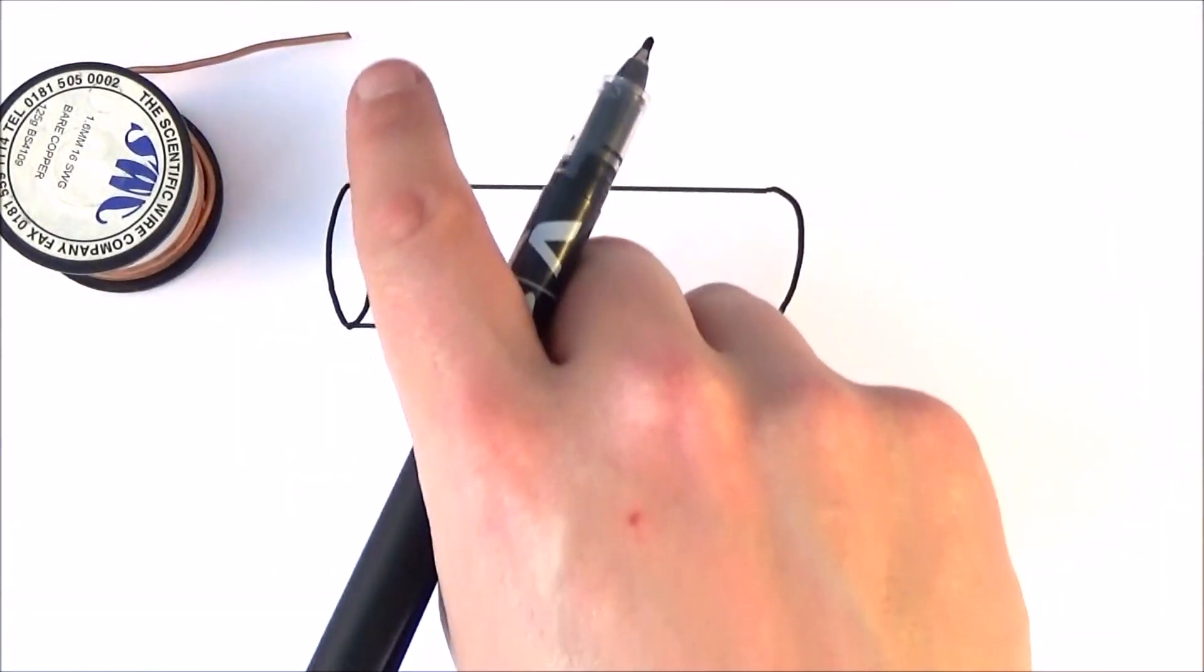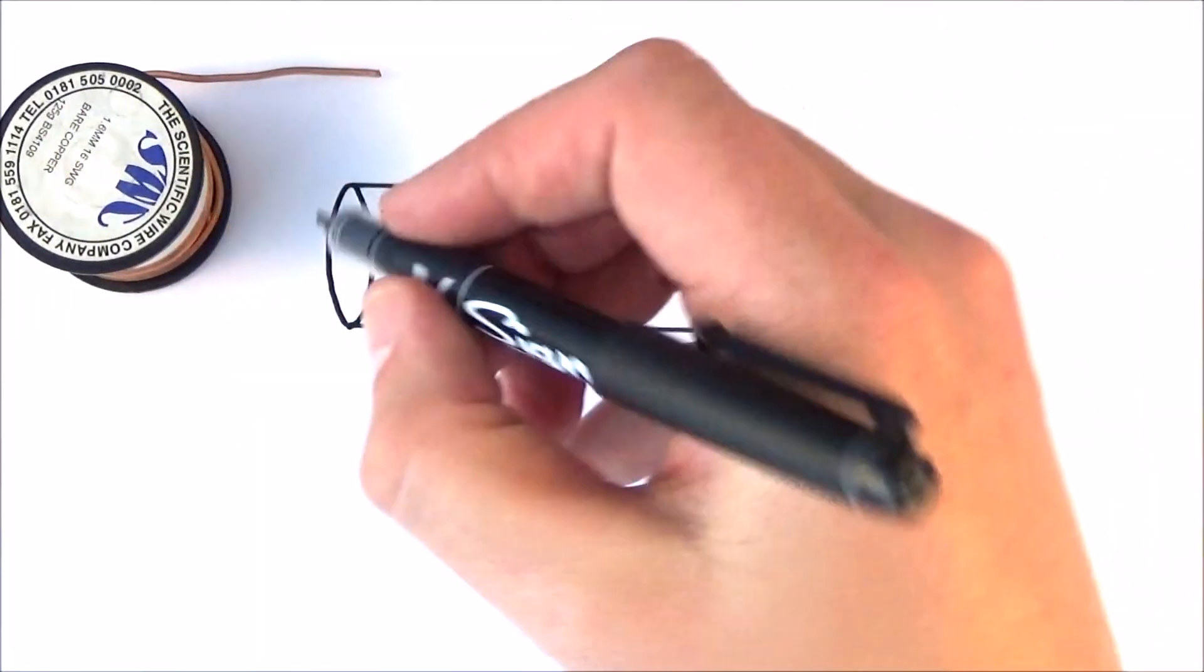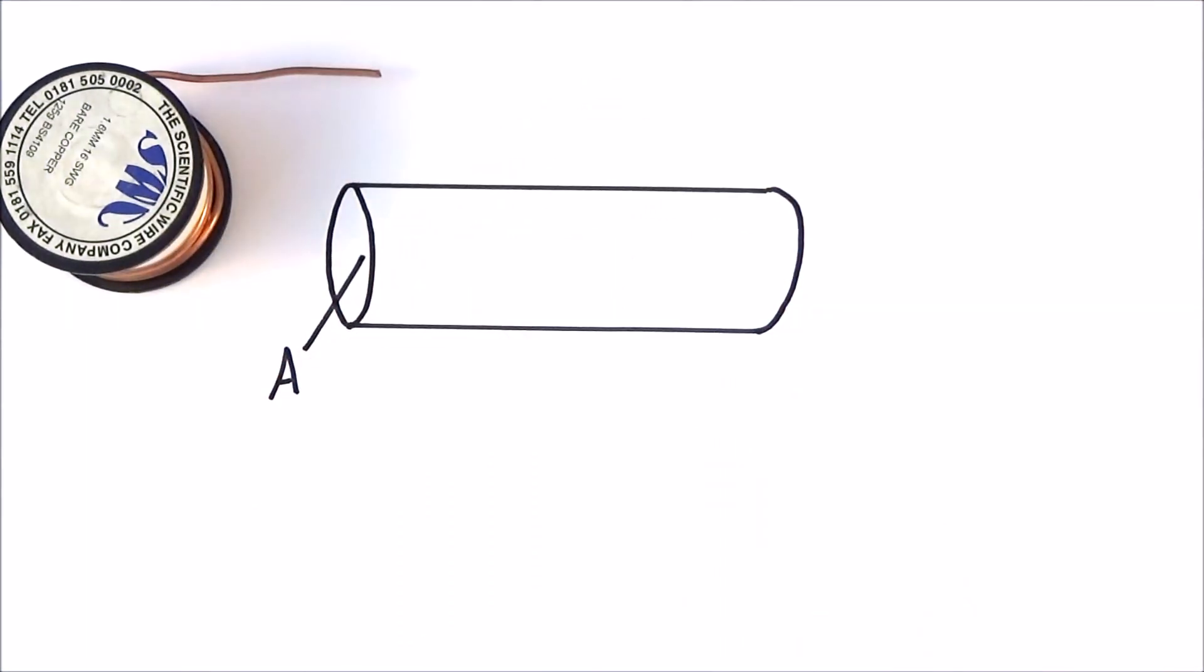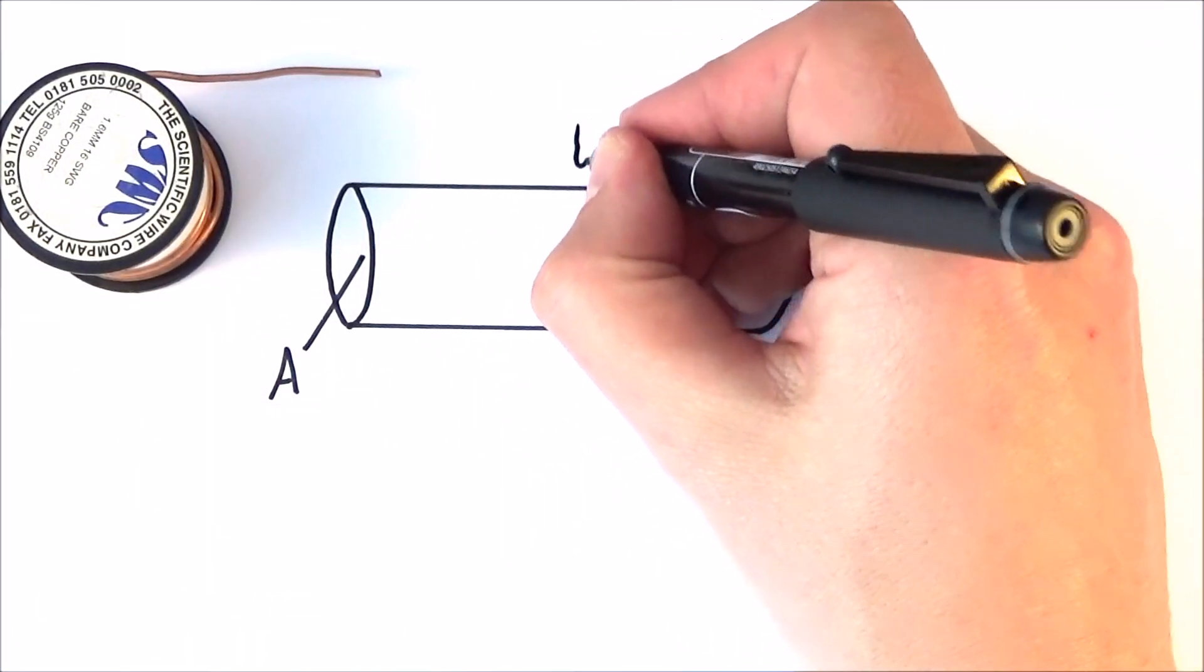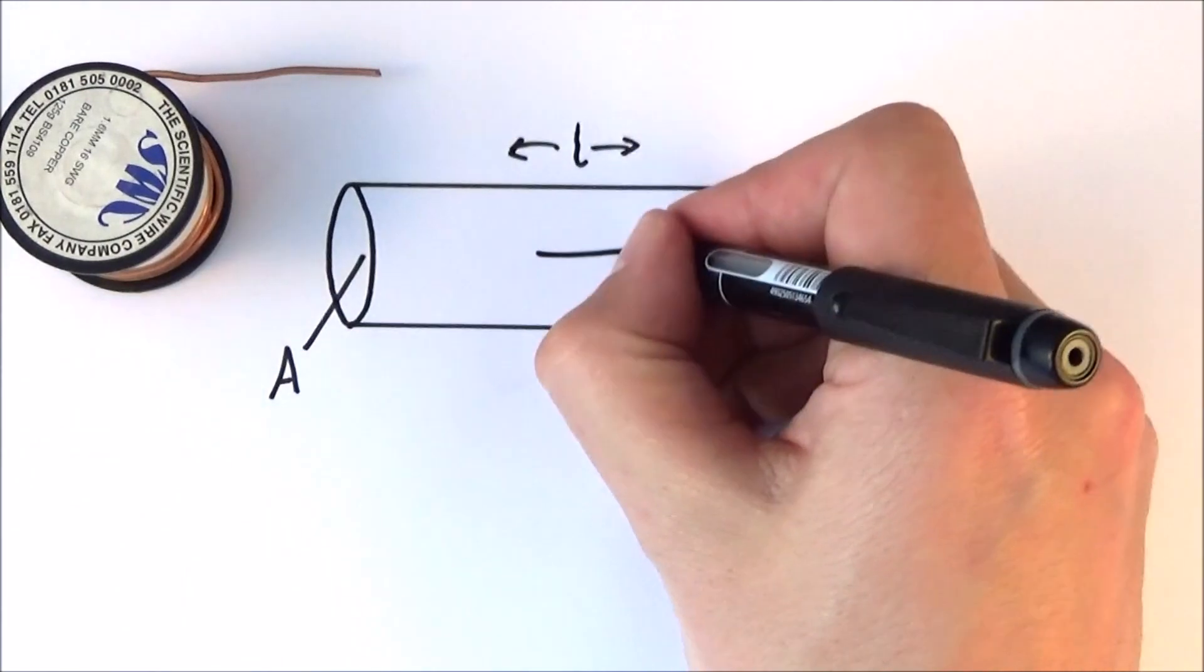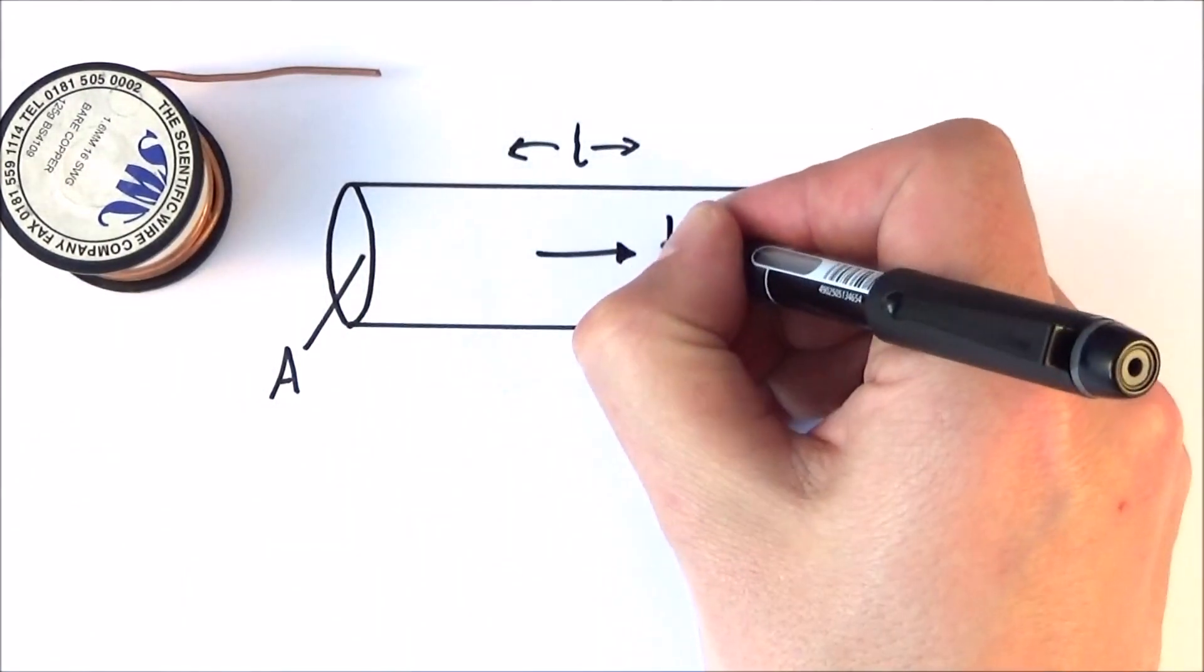So here I have a diagram of a cross-section of this piece of wire. Now there's a few things to note. First of all, it has a cross-sectional area A, which is equal to πd² over 4. There's also a certain length of wire, which we're going to call L, and flowing through this wire there's going to be a certain current, which I'm going to call I.